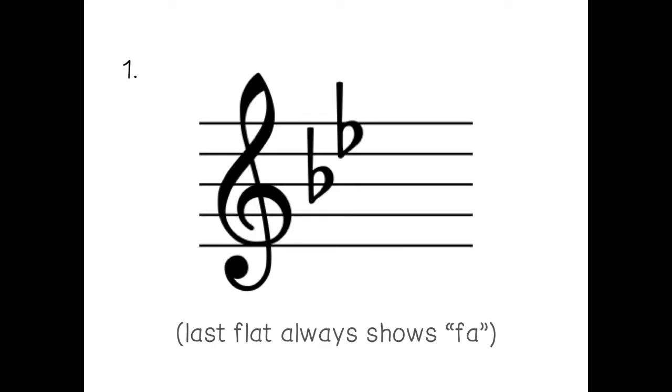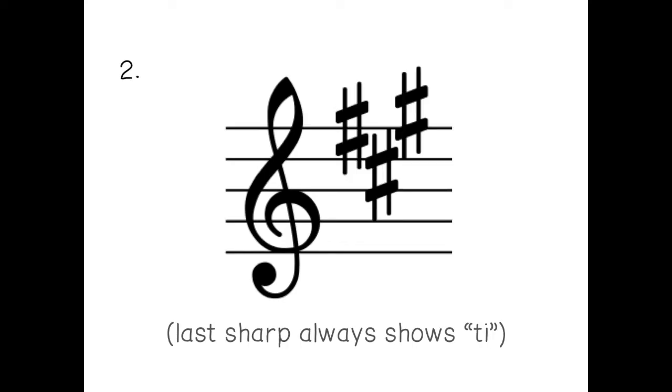So for this key signature, I've given you a reminder that the last flat always shows fa. So that will help you work it out. So this is true or false. This key signature could show A major. So you'll probably need to pause and freeze the screen so that you can work out where your flats go. But could this key signature show A major?